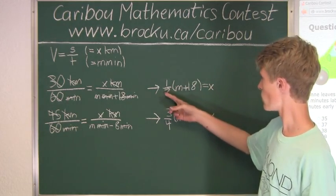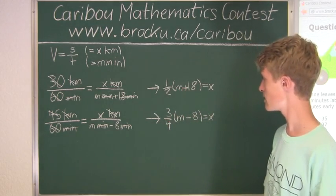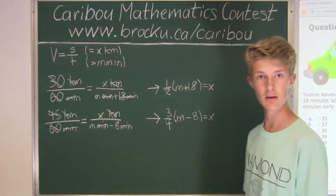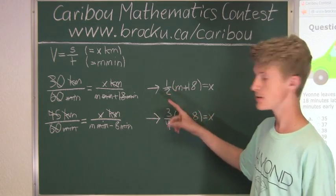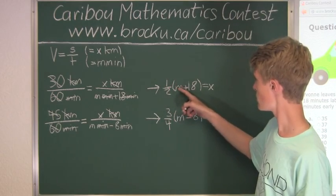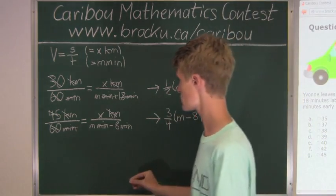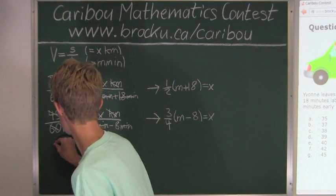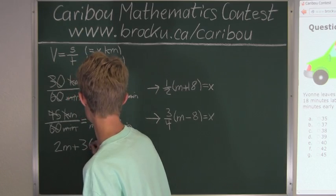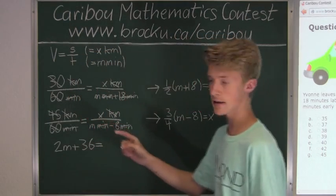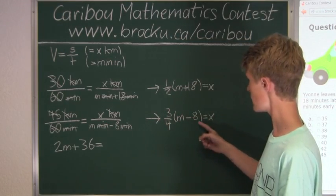So now we will have 1 over 2 times N plus 18 equal to 3 over 4 times N minus 8. So what we will already do is multiply both sides by 4. So then we will have 2N plus 2 times 18 is 36. So we will have 2N plus 36. And that will be equal to this. So when we multiply this by 4, we have 3 times N minus 8. So that is 3N.